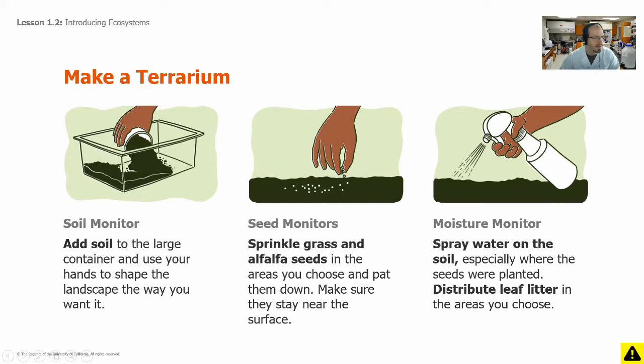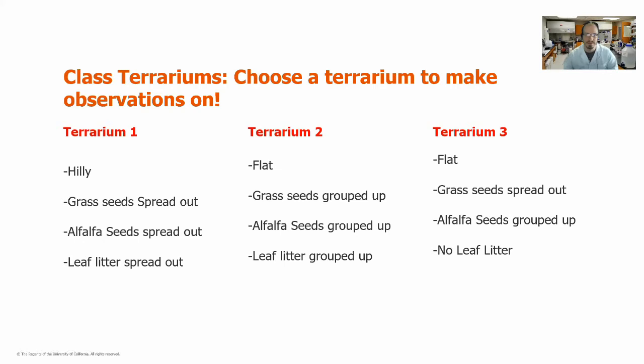I'm going to set up three different terrariums, and you are going to choose which one you'll be observing for the rest of the unit. In terrarium one, we'll have a hilly landscape, with grass seeds spread out over the whole thing, alfalfa seed spread out over the whole thing, and leaf litter spread over the top of the whole thing. Terrarium two will be flat, with the grass seeds grouped up, alfalfa seeds grouped up, and leaf litter grouped up altogether.